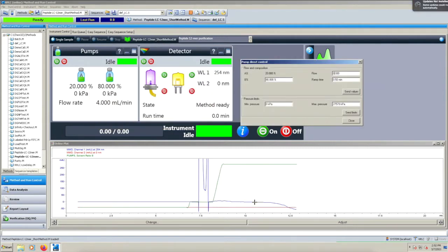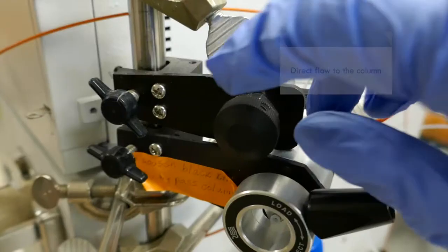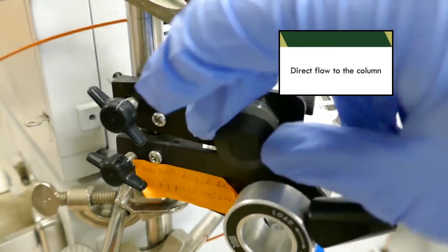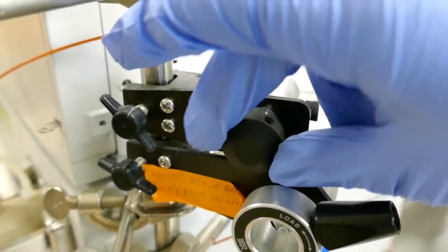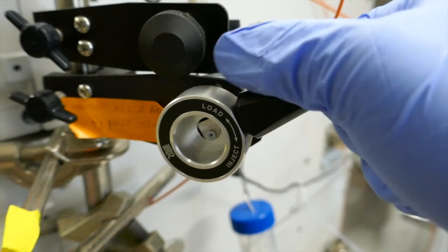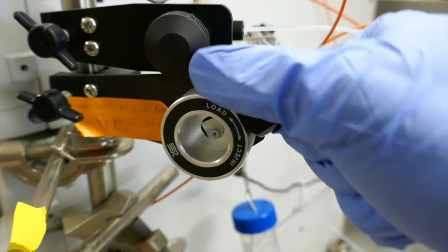Let the pump run for 1 to 2 minutes at 4 mls per minute before you bring it back down to 0 mls per minute. In order to direct flow over the column, tighten the black knob bypass back and then switch the injection loop to the load position.